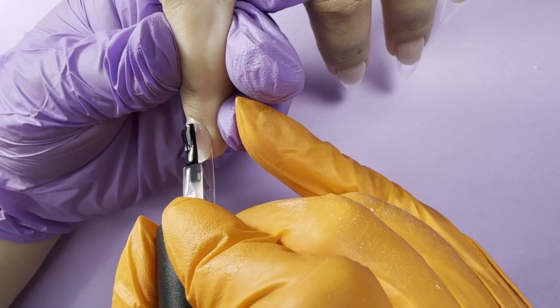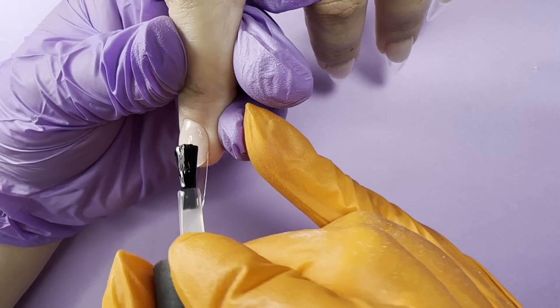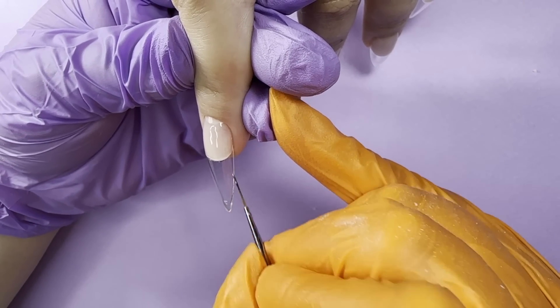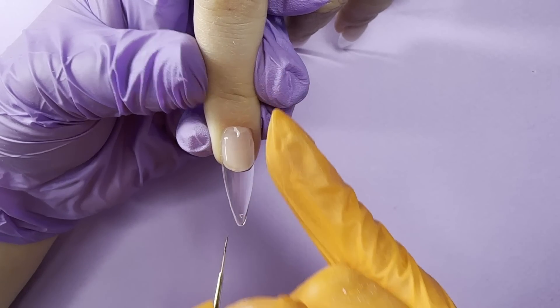And after filing this area near the cuticle, I apply some builder gel and add some near the cuticle. So the surface will be smooth and we will not have any margin.